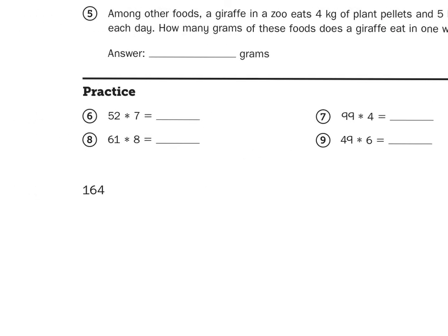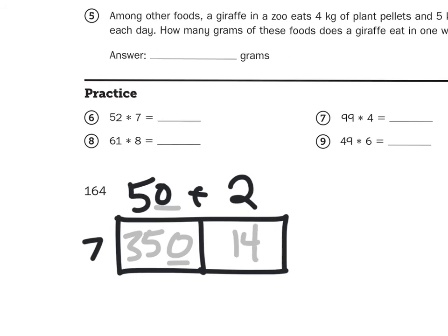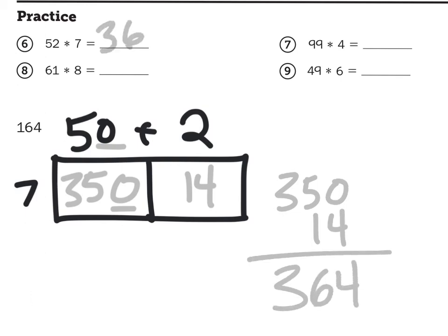It says practice, and they're two-digit multiplication problems. Now, it doesn't say how to practice. You can either use partitioning rectangles or partial products. I'm going to do one of each. So, let's do number 6, 52 times 7. So, if I use the partitioning rectangles method, 52 is 50 plus 2. I'm going to multiply both those parts by 7. 50 times 7 is the same as saying 5 times 7, with a 0 behind it, 35 tens, or 350. And 7 times 2 is 14. I'm going to add those two amounts together, 350 plus 14, and that gives me a total of 364. That's my product.